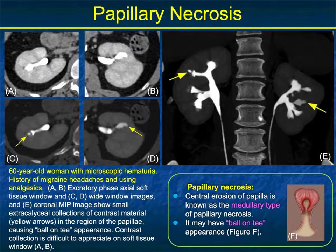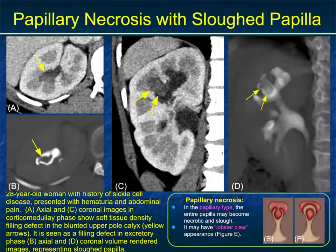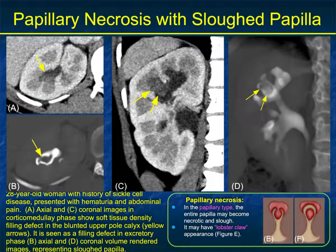Here's a nice example of a patient with microscopic hematuria. Looking at the upper images you don't see much, but when you widen the windows you see the changes of papillary necrosis — the ball-on-T appearance — and on MIP imaging it's much easier to see. A very important finding that is very easy to recognize once you know what to look for. With papillary necrosis there can be sloughed papilla, as shown here — really easy to see and best appreciated on MIP imaging, where the destruction of the papilla is very nicely shown.